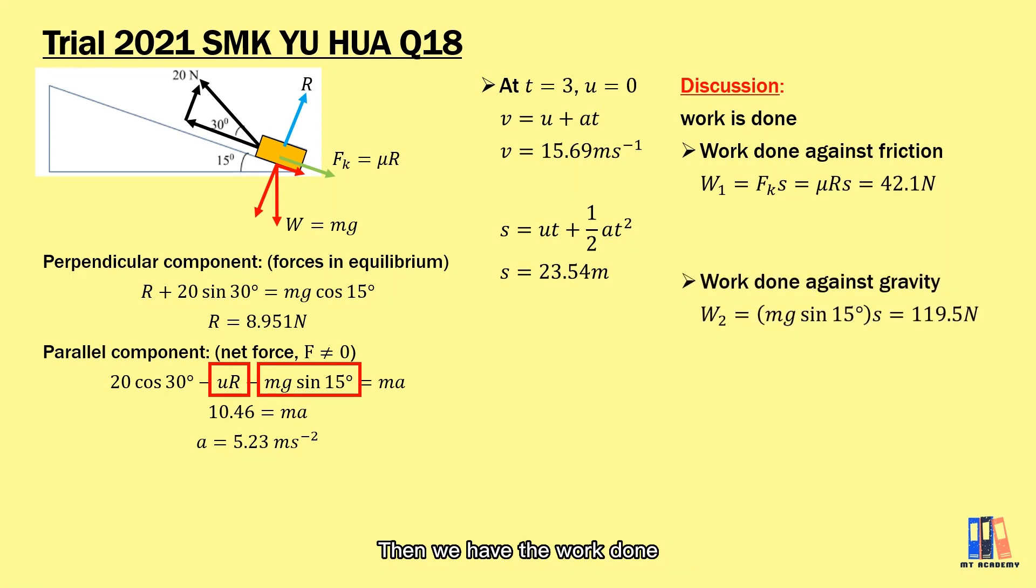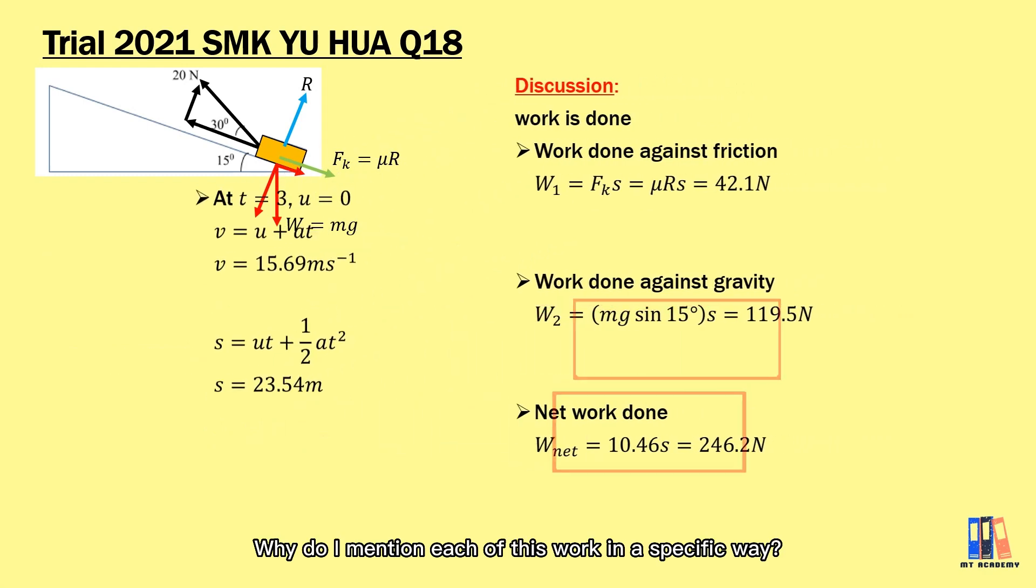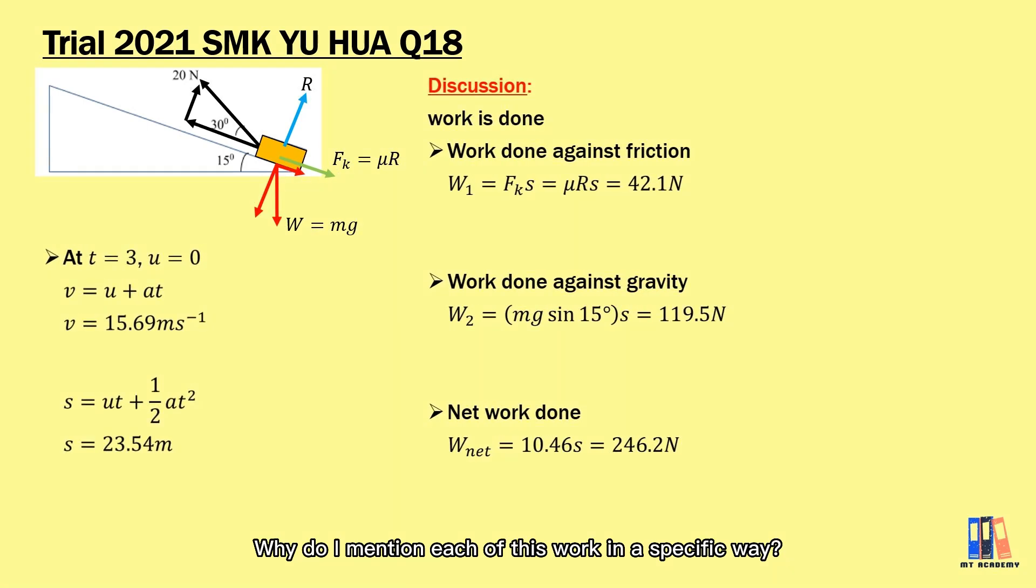Then we have the work done against the gravity. So put into the formula W = Fs. The work here is equal to 119.5 newton. After that, we have the net force of 10.46 newton. We have the net work done of 246.2 newton. So why do I mention each of this work in a specific way?